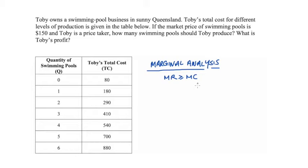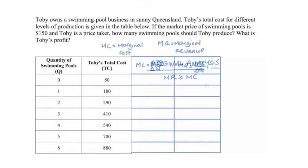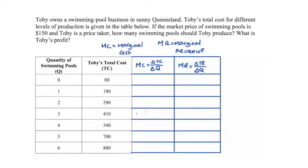We need to find, for each level of production, the marginal revenue and the marginal cost, so I'm going to make two new columns. The formula for marginal cost is that we take the change in total cost divided by the change in quantity — it's the additional cost incurred from making one more unit.